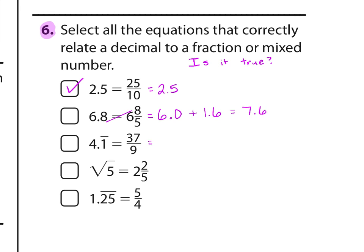37 ninths, 37 divided by 9 is 4.1 repeating. That is true. Square root of 5 is 2.236 and keeps going. It's a decimal that never ends. We want to know, is it equal to 2 and 2 fifths, which we get 2.4. It is not. They're not the same.